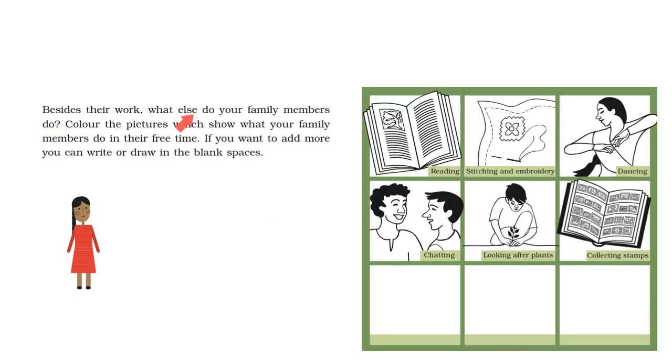Besides their work what else do your family members do? Color the pictures which show what your family members do in their free time. If you want to add more you can write or draw in the blank spaces given below. So in Sita's family her father likes to read, her mother likes to dance and her sister likes to collect stamps in their free time. In your book you ask your family members what they do in their free time and color the appropriate pictures.